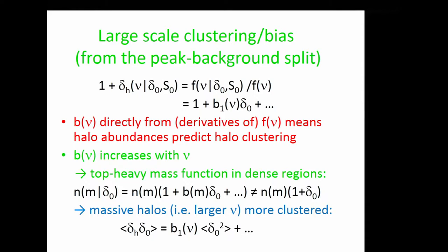The bias factor can depend on mass or tracer type but does not depend on scale, so it does not change the shape of the power spectrum — only the amplitude. This comes simply from the fact that dense regions have a different mix of halos because a dense region is an effectively curved universe.